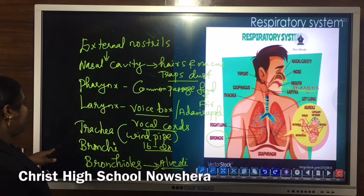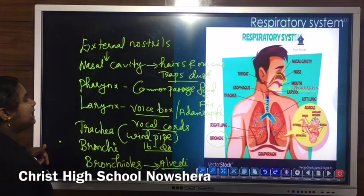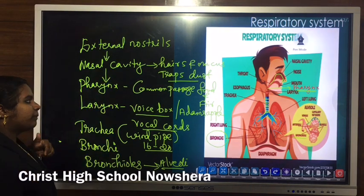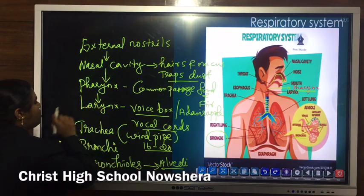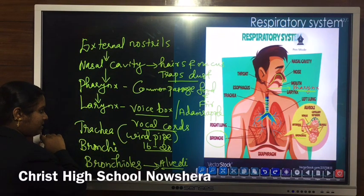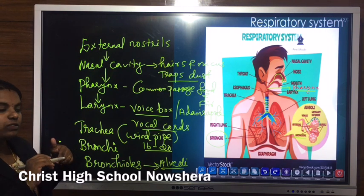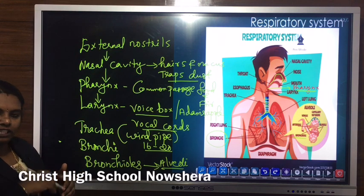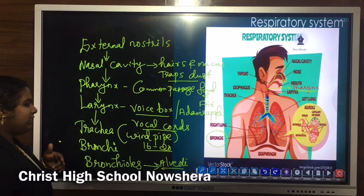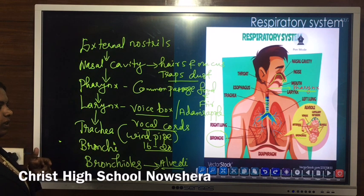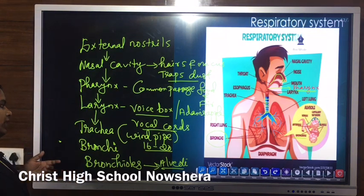The nasal cavity contains fine hairs and mucus which trap the dust particles from incoming air. The nasal cavity leads to the pharynx — the common passage for food and air. Then pharynx leads to the voice box or larynx. When air passes through larynx, the vocal cords produce sound. Larynx leads to the trachea, a cartilaginous structure made up of 16 to 20 cartilaginous rings.